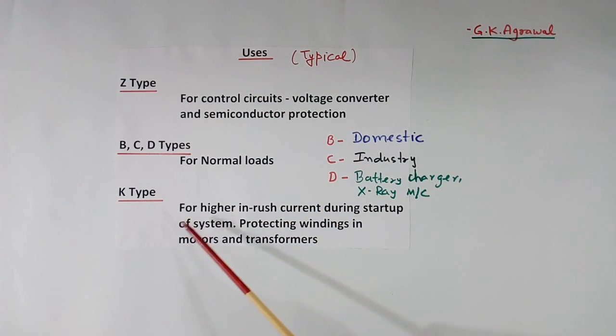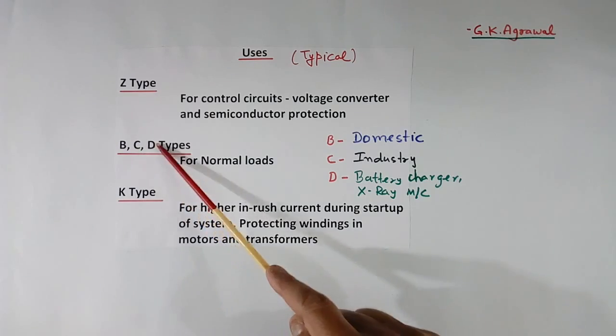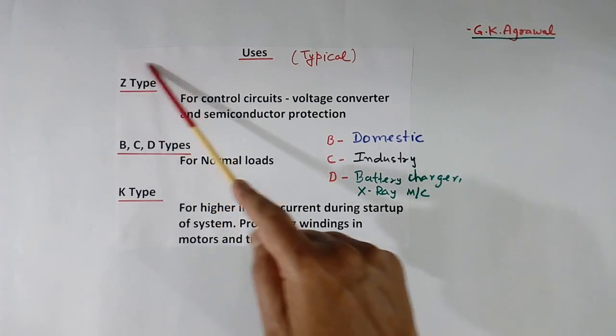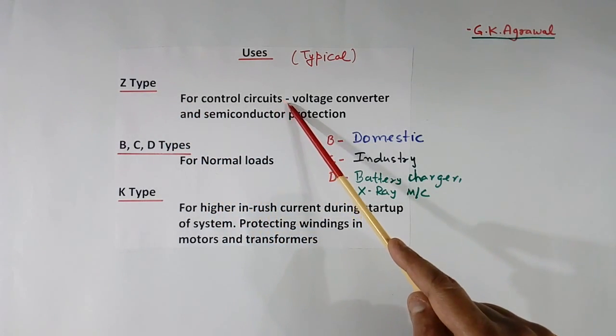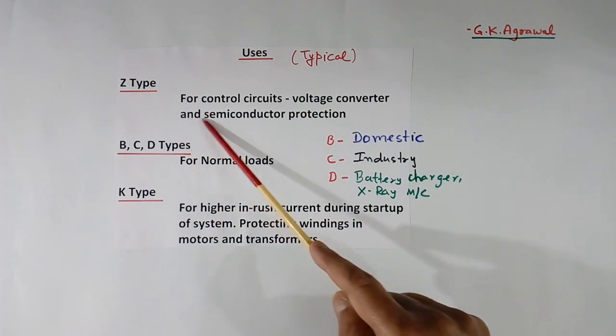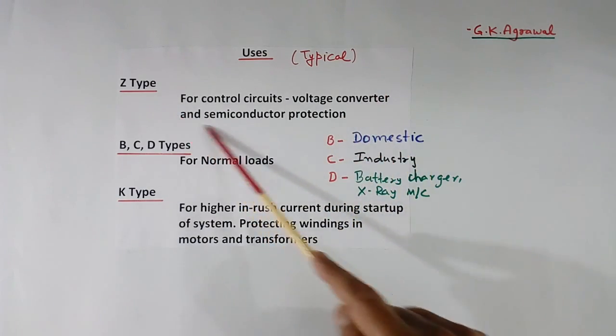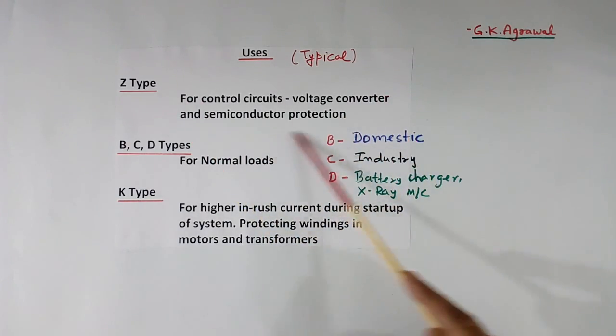Usage: I have told about 5 types of MCB - B, C, D, K and Z. These are typical usages. Z type is used for control circuits, for example voltage converters and semiconductor protections. Just now I gave a design example for this type only.